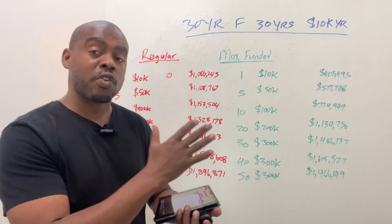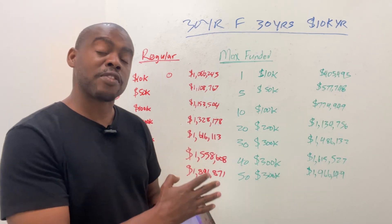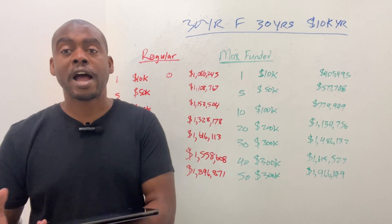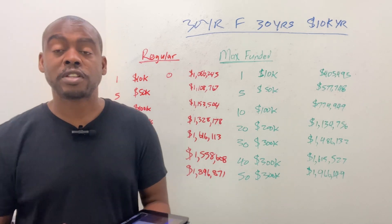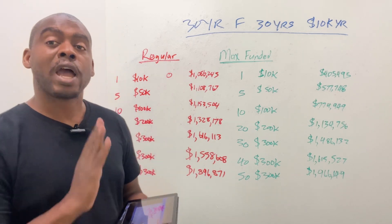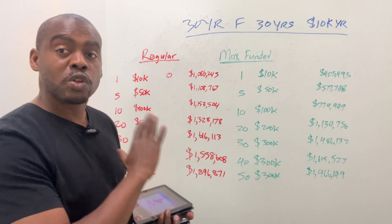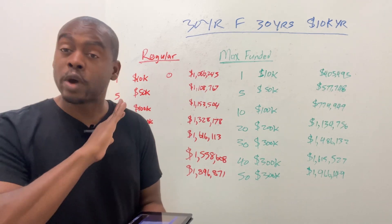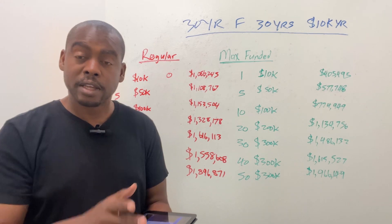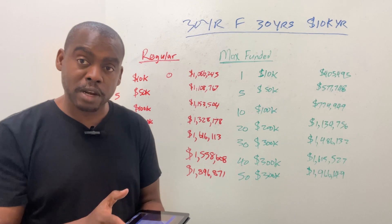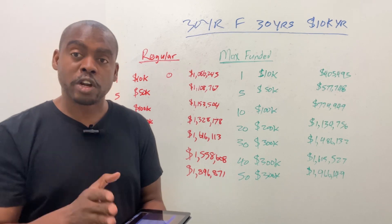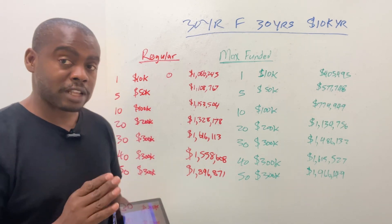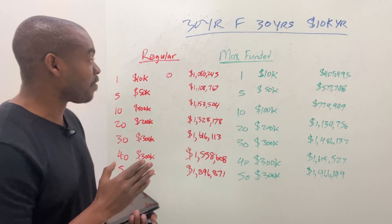You can structure it for max funding for higher cash value, or you can structure it for a high death benefit. I'm going to show you how those two look different using the same money — no extra money — but it works differently for you based on your goals. Let's dive into it and have fun.